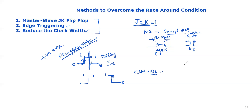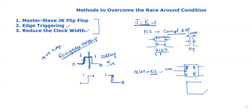For edge triggering, in the symbol of the JK flip-flop, we use J, K, Q, and Q'. A triangle symbol at the clock input indicates positive edge triggering. If there is a bubble before the triangle, it indicates negative edge triggering. You can apply either one of these two methods to stabilize the output.